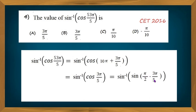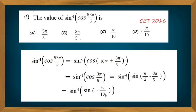Simplifying: the LCM is 10, giving (5π − 6π)/10 = −π/10. So this becomes sine inverse of sine(−π/10). Since −π/10 lies in the interval [−π/2, +π/2], which is the range of the inverse sine function, sine inverse of sine(x) equals x. Therefore the answer is −π/10, which is option D.